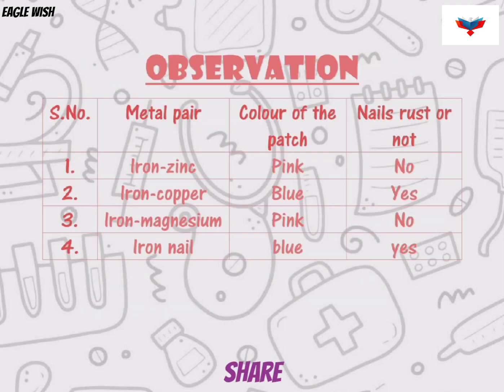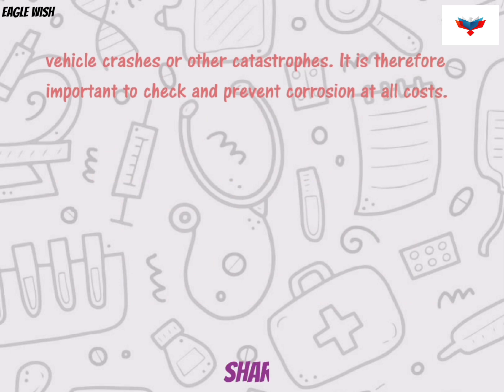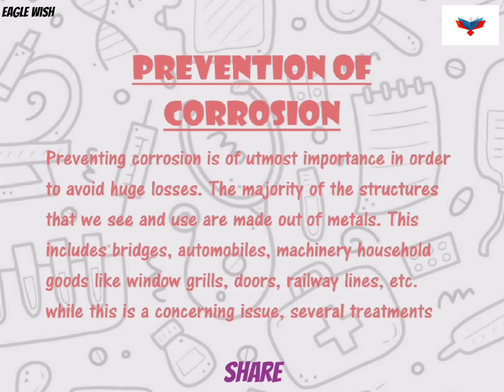After that we will write the observation in tabular form. We will also write the effects of corrosion and how to prevent metal from getting corroded.